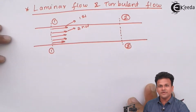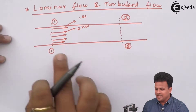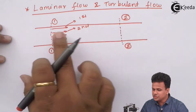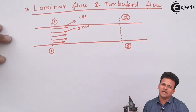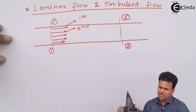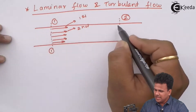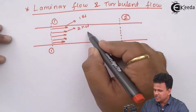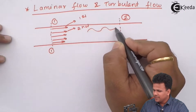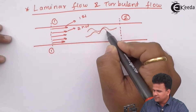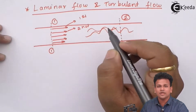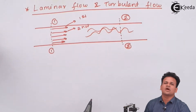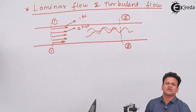In turbulent flow, there is actually mixing of the entire fluid. In this section, there will be mixing of the adjacent layers of the fluid, and that is called turbulence.